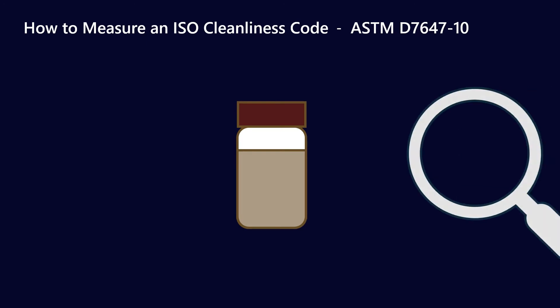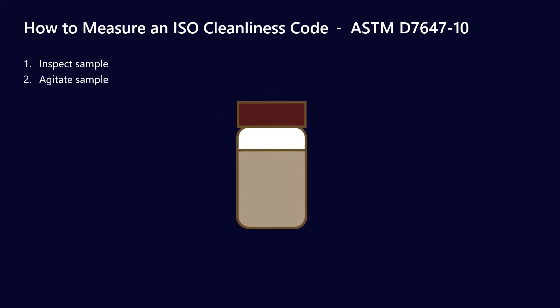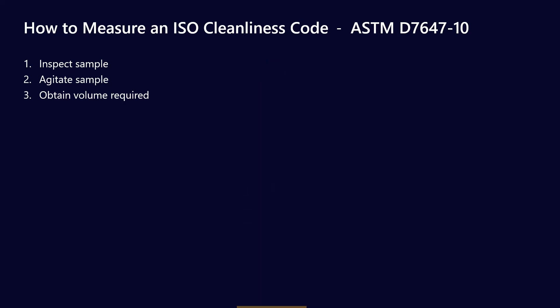Step one: get your sample and do an inspection. I've covered why you would do an inspection in a previous video — effectively it's to look for contaminants, water, etc. Step two: agitate the sample to make it homogenous. Step three: obtain the volume required for the cleanliness code test. Remember, on this oil sample we're probably running a whole bunch of tests — ICP, FTIR, etc. — so just the volume that we need for the cleanliness test.